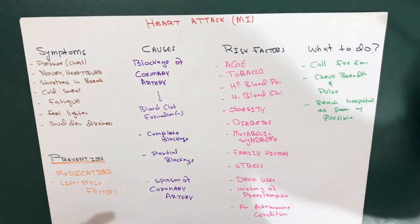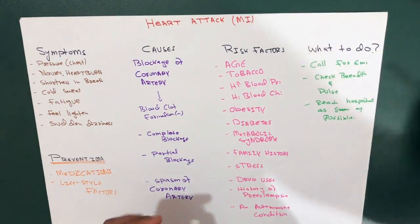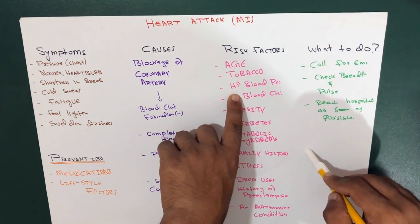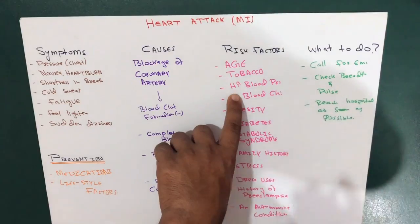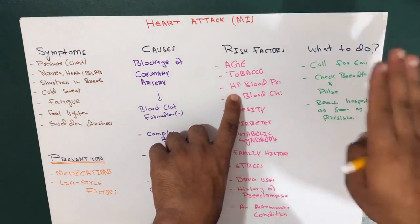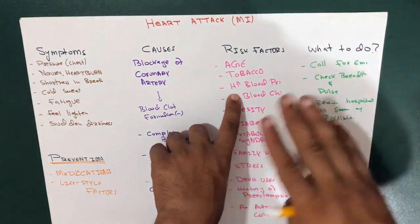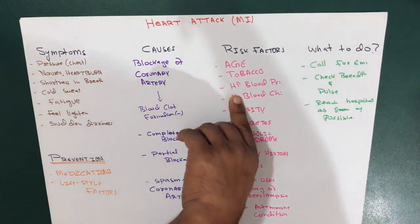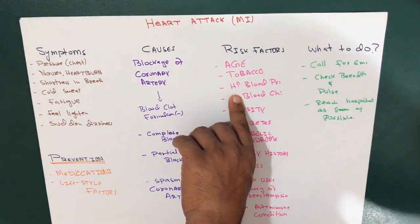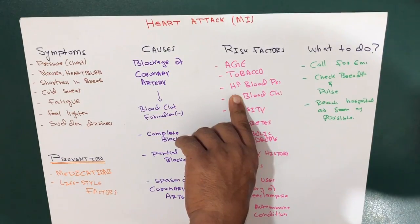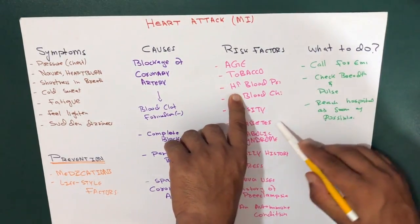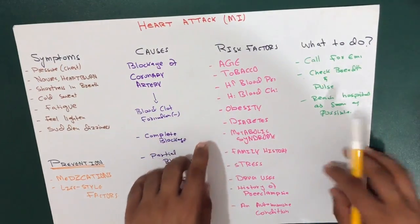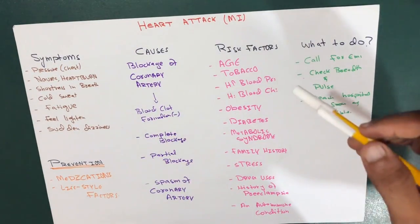High blood pressure is a major risk factor. Over time it can damage the arteries that feed your heart. High blood pressure occurring alongside conditions such as obesity, high cholesterol, or diabetes increases your risk even further.